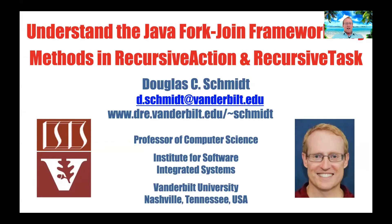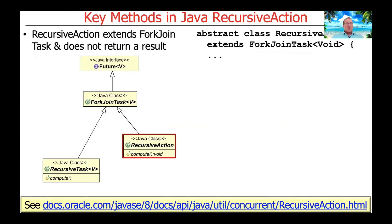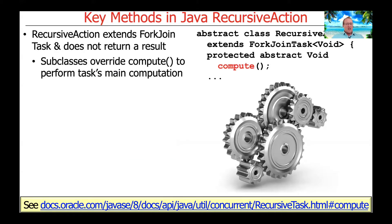We're going to talk about the key methods in RecursiveAction and RecursiveTask, which are classes that you often implement when using ForkJoinPool. RecursiveAction is a subclass of ForkJoinPool that allows computations to occur, but the compute method that is defined doesn't return a result. Subclasses of RecursiveAction will override the compute hook method in order to perform the task's main computation.